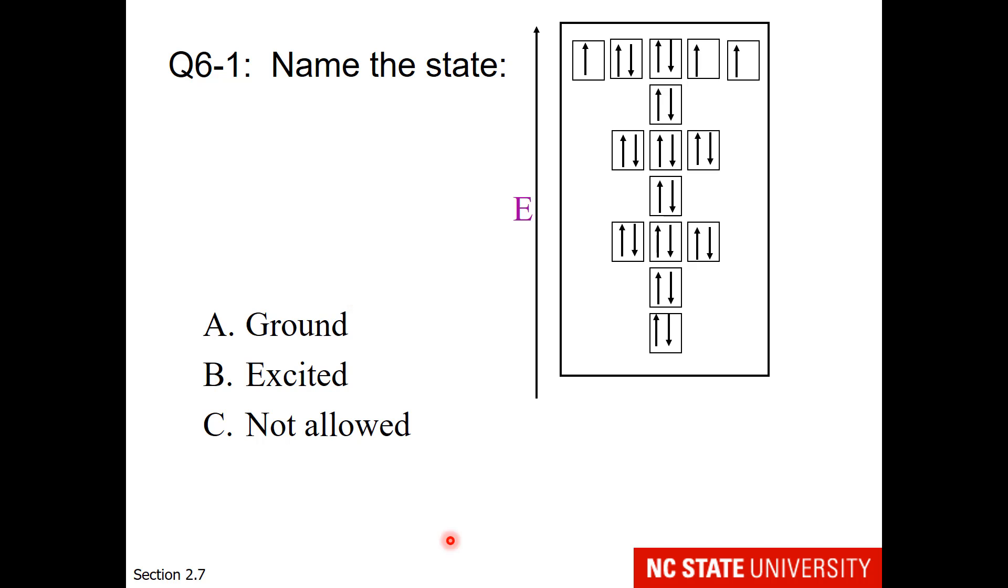Here is a question for you. You are being asked to name this state. Everything looks good there. Here, this is a d sublevel because we have five orbitals. So take a look at that row and decide what the state is.